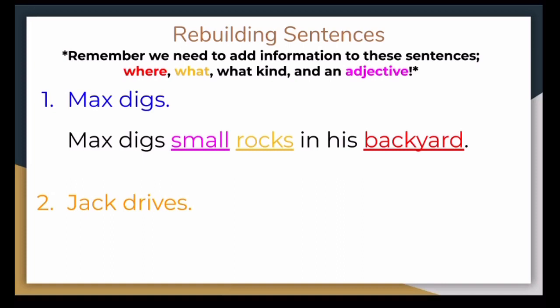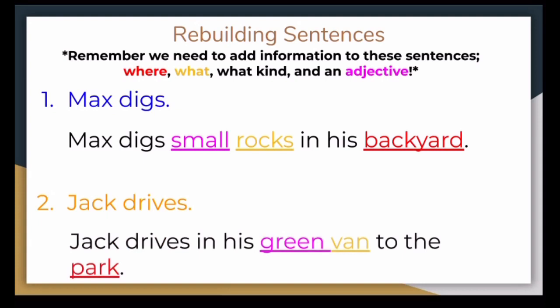Let's try number two. Jack drives. I need to add where, what, and an adjective. Jack drives in his green van to the park. Well, we have where. He went to the park. What was he driving? We have a van. And the adjective I put was green, because it describes the van. Remember, adding these specifics to your sentences make it very easy for people to visualize what's going on.